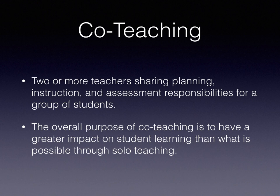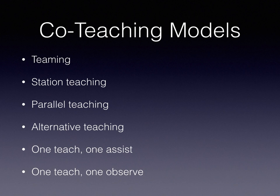Co-teaching is two or more teachers sharing planning, instruction, and assessment responsibilities for the entire group of students, with the purpose of having a greater impact on student learning than solo teaching. Different models include teaming — both teachers teaching the whole group simultaneously — which is the most difficult model, requiring extensive planning so that both teachers are utilized to their full potential rather than one teacher just assisting the other. Teaming is helpful when using explicit instruction with a large group, because providing immediate feedback during guided and independent practice requires more than one person.